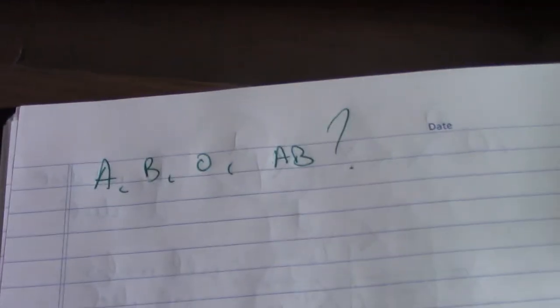So you have four children. One's A, one's B, one's O, and one's AB. Can they have the same two biological parents? Well, let's take a look.